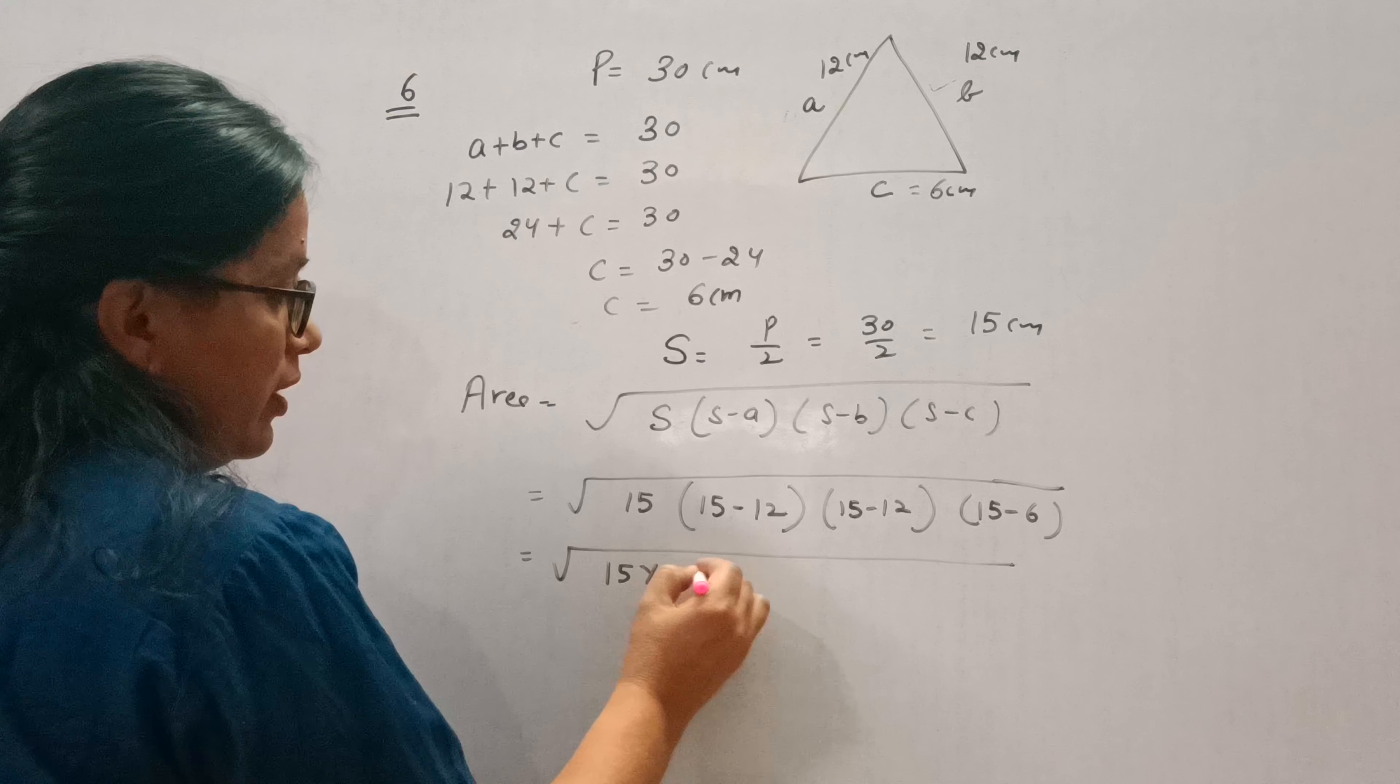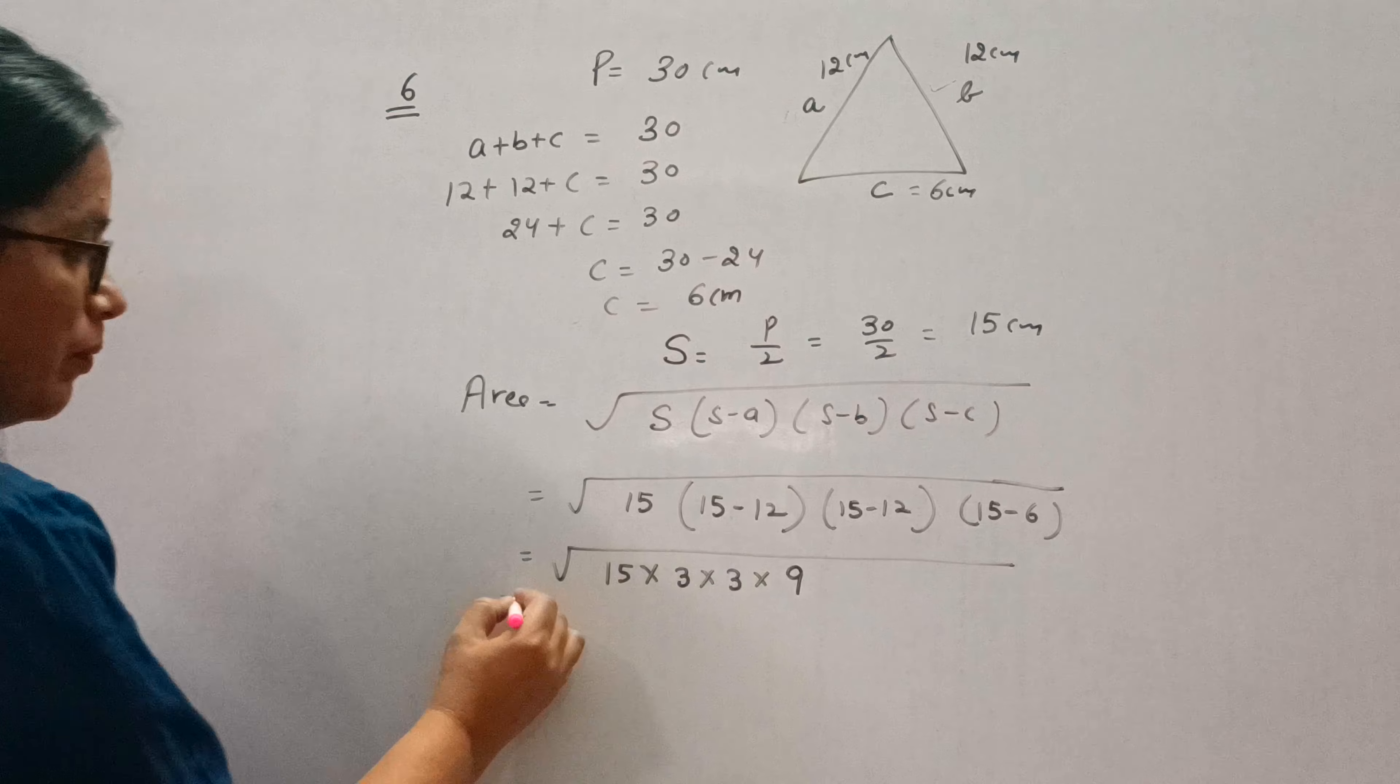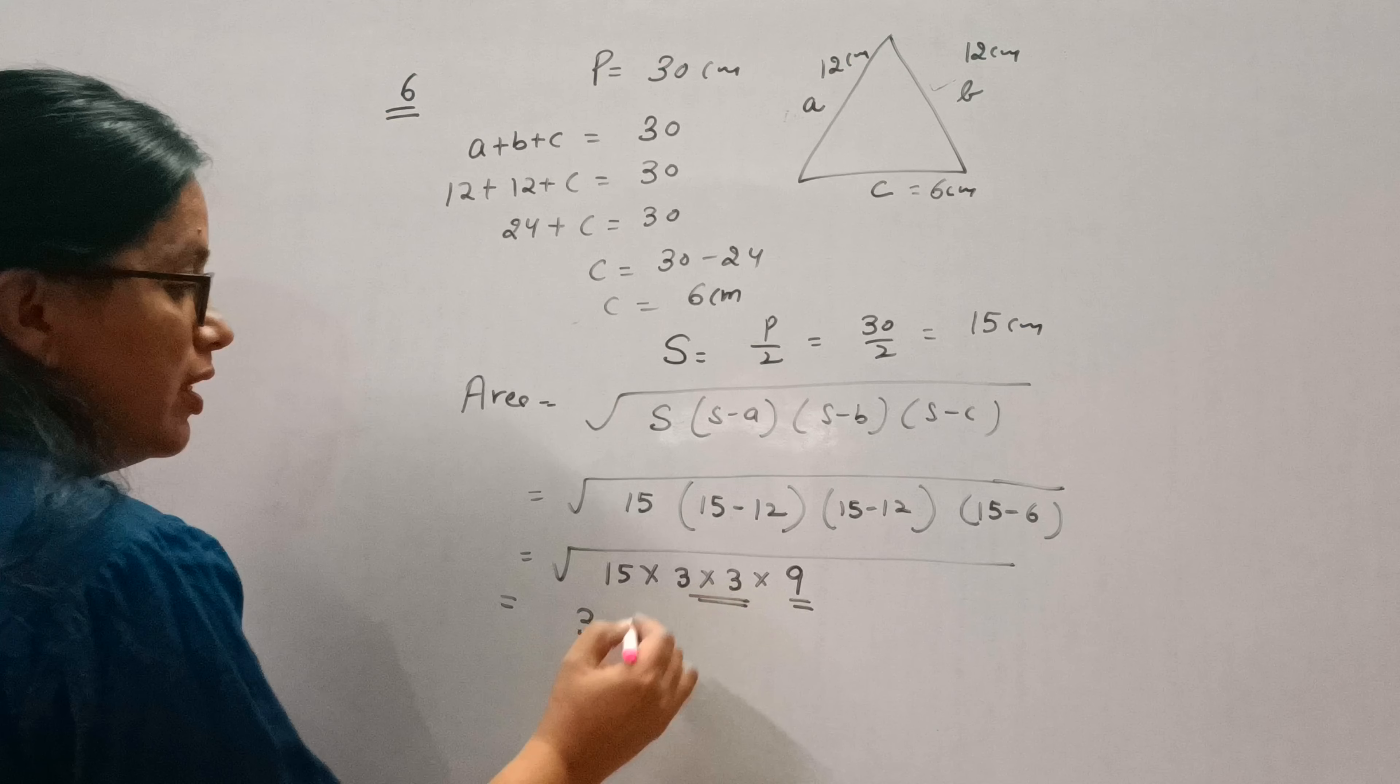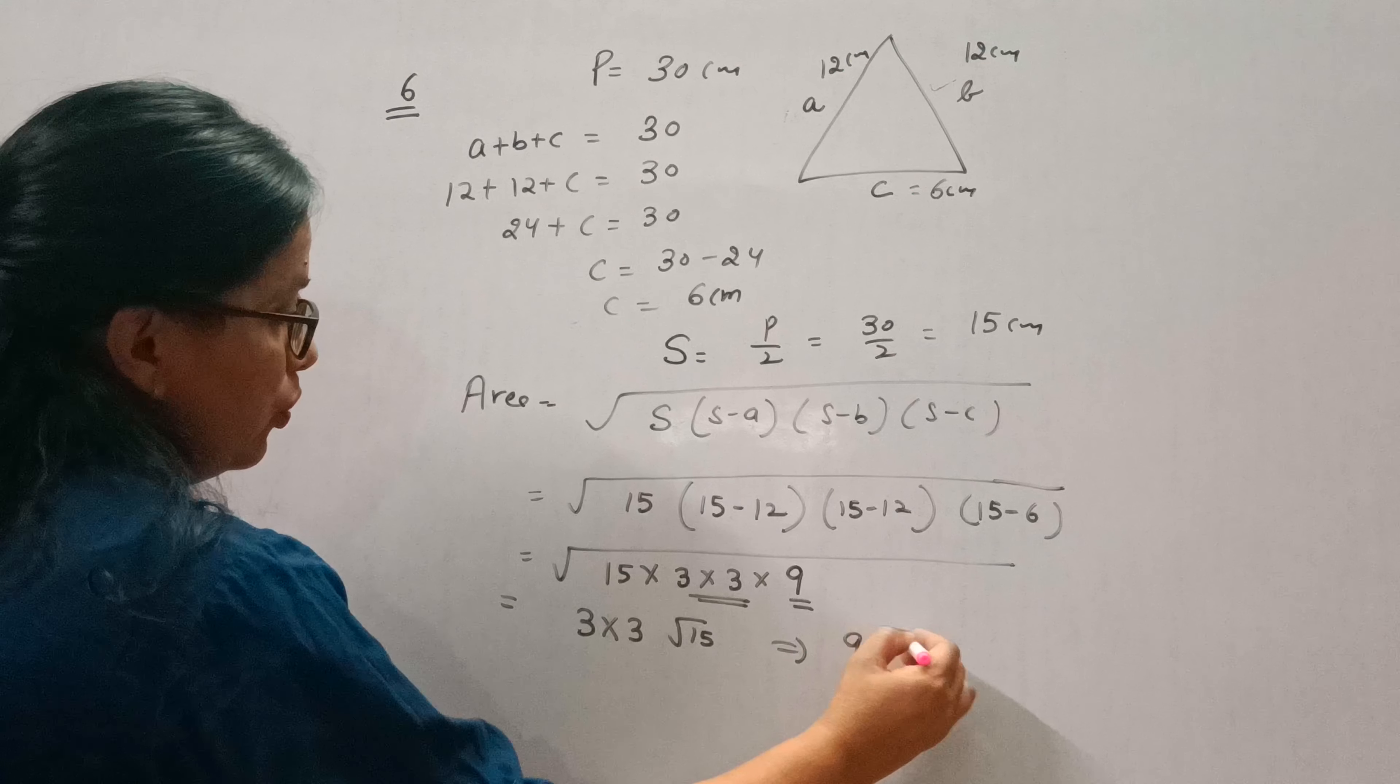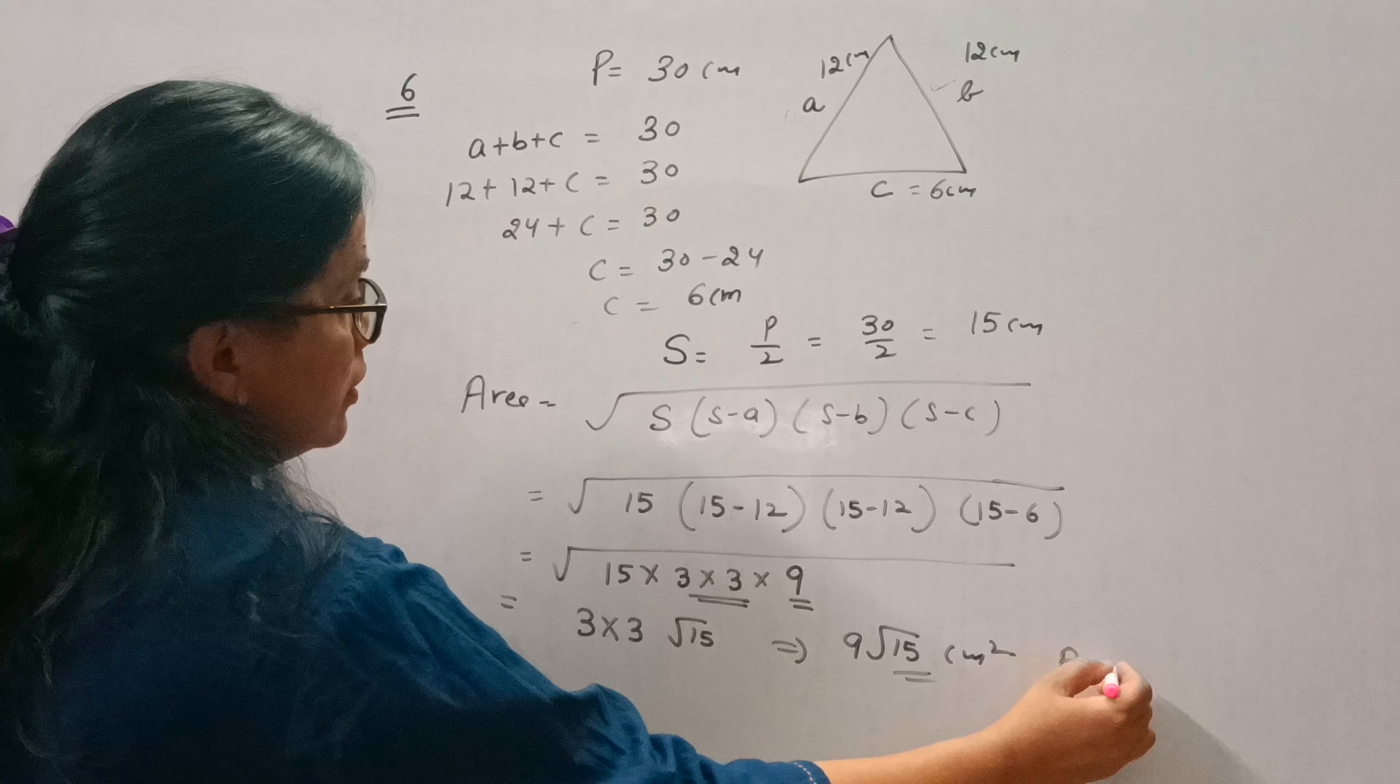15 minus 12 is 3, 15 minus 12 is 3, 15 minus 6 is 9. Square root of 9 is 3, and there is a pair of 3, so 3 comes out. This gives us 9√15 cm² as the answer.